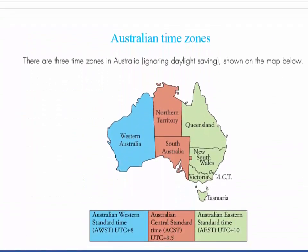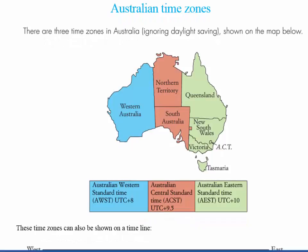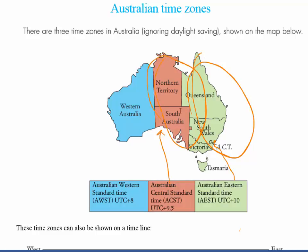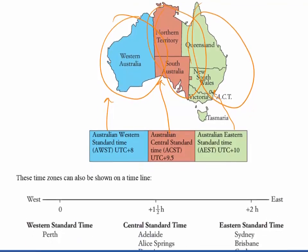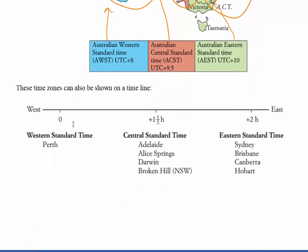Now you need to know about Australian time zones. In Australia we have three: Eastern Standard Time, which is the whole eastern seaboard; Central Standard Time, which is the centre of Australia; and Western Standard Time, which is the western part. Time zones can be shown on a timeline — if I consider Western Australian time as zero, there's another hour and a half to Adelaide, and then two hours to Sydney. That's the time difference in Australia.